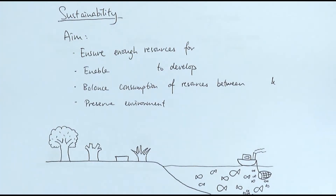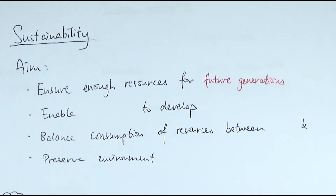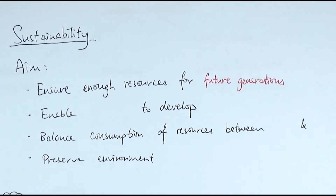In this video we'll be looking at sustainability — first, what sustainability is and what its aims are, and then we'll look at two examples of sustainable development: timber production and fishing. Sustainability is about ensuring that there are enough resources for future generations to use.